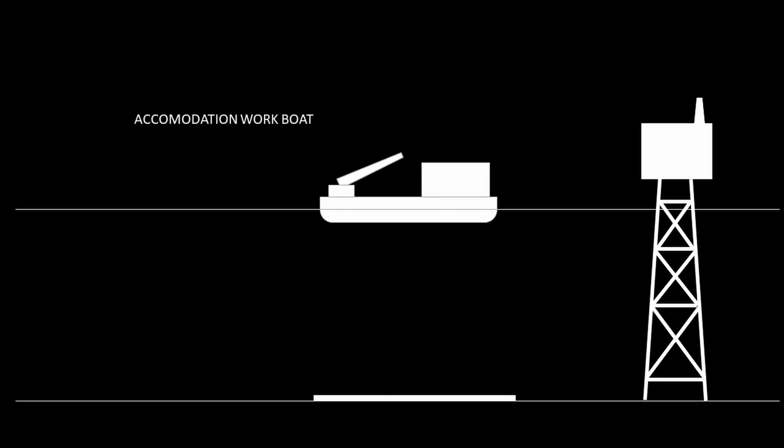vessels like accommodation and work barges are required to be stationed near offshore structures. These vessels act as a platform for personnel to live and also to carry over certain operations like lifting, pipe laying, etc. These vessels may be non-self propelled and they might not have a dynamic positioning system.